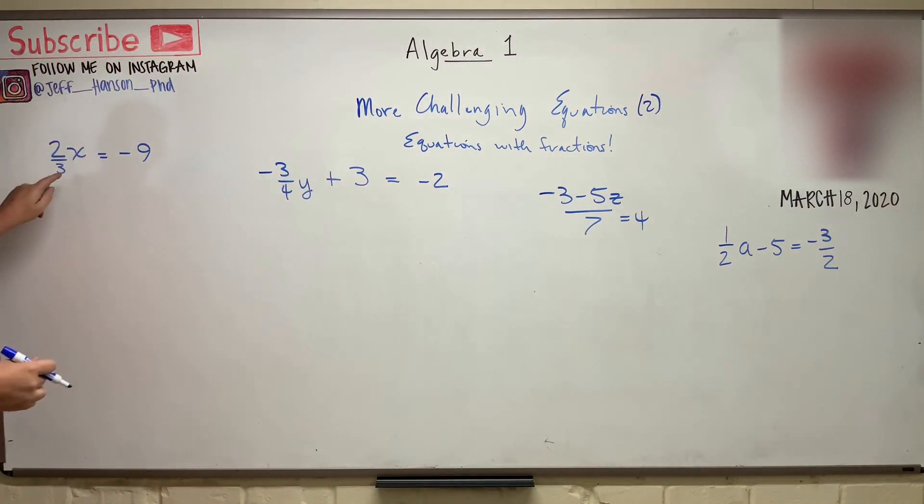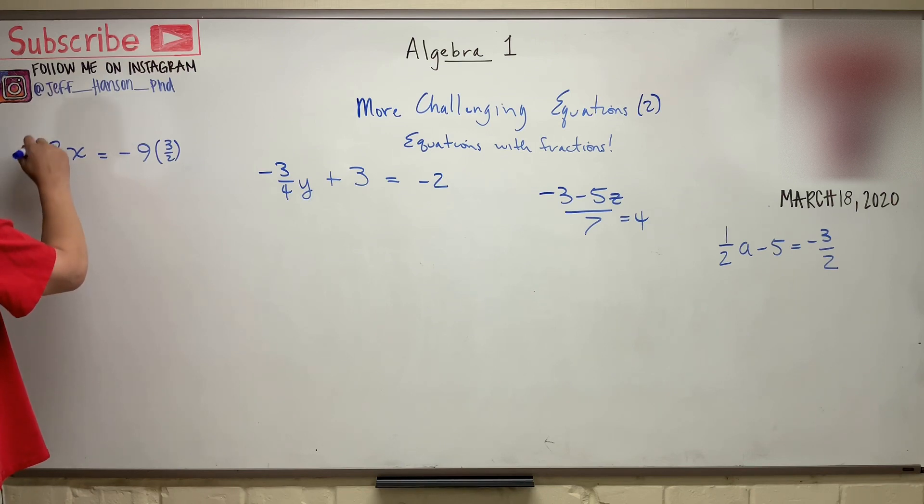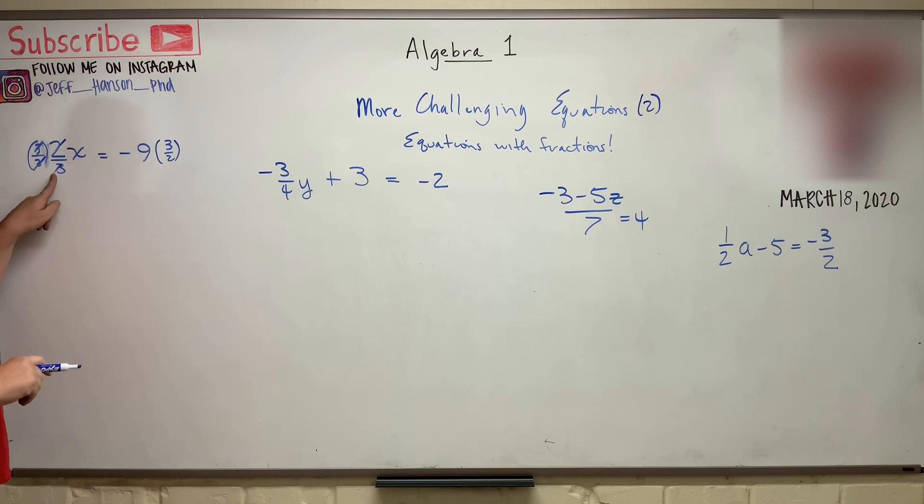So how do I get rid of two-thirds? Well, you know what you can do? You can multiply each side by the reciprocal three-halves. Oops, that wasn't very good, was it? Okay, because when I multiply two-thirds by three-halves, guess what? The threes divide away, and the twos divide away, and leave me with what? Just one, right?